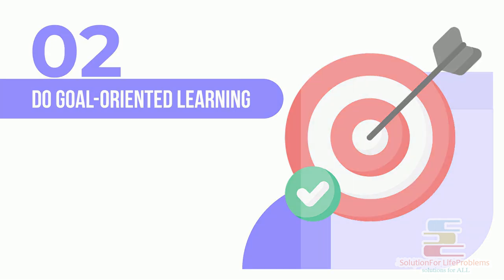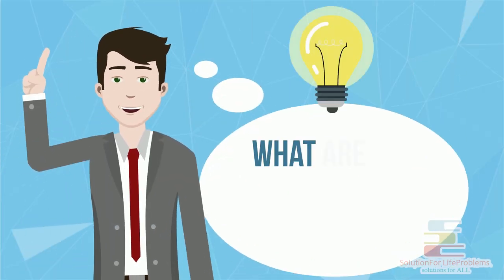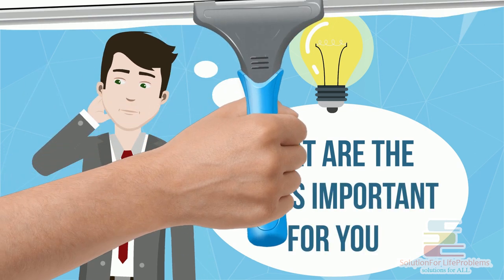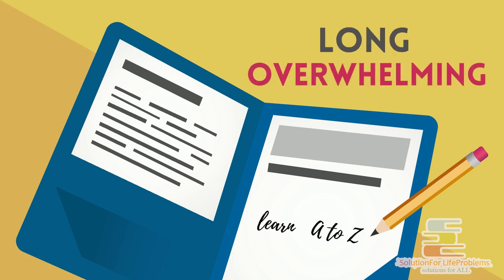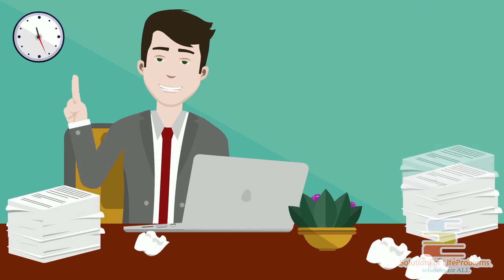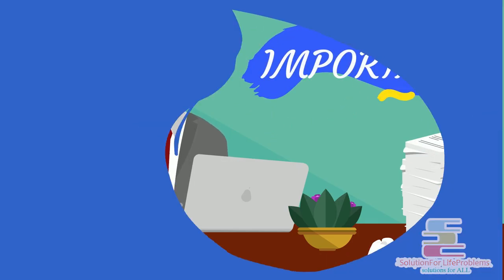Now once you have decided your end goal clearly, the next step is to decide what are the topics important for you to learn. You should not try to learn everything from A to Z of that skill. Learning a skill from start to end is very long and overwhelming. Learn only that much which will help you to achieve your goal. The rest of the things you can learn later on.